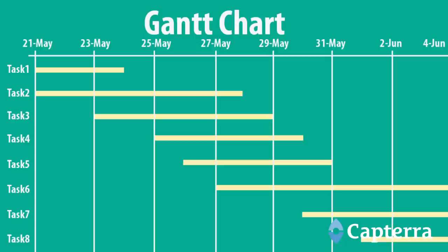So what is a Gantt chart? My guess is that you've seen them before. They look just like this — a bar chart with dates that mark the start and finish of the parts of a project. They're laid out in order of when a task needs to be completed.